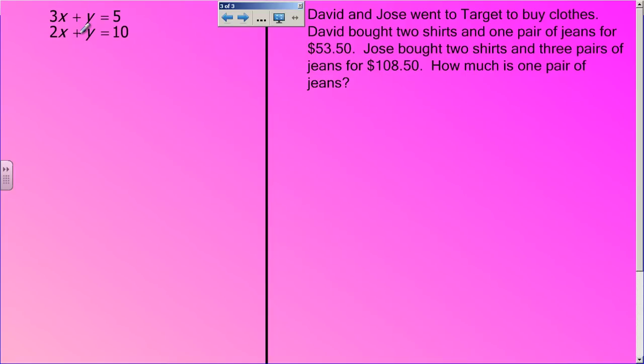If I were to add these up, they would not eliminate because y plus y does not equal 0. It equals 2y. So I have got to make it so that these are opposites. When this happens, you can take one of the equations, and it doesn't matter which one. I'm just going to take the top equation, and you have to multiply it by negative 1. That will change all the signs, but not any of the numbers. So my top equation is now negative 3x minus y equals negative 5, and my bottom equation stayed the same.